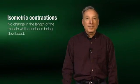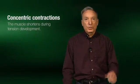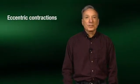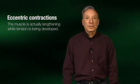First, let's review the three major types of contractions performed by skeletal muscle. I will provide an example of each one. Isometric contractions are defined as no change in length of the muscle while tension is being developed. In a concentric contraction, the muscle shortens during tension development. Lastly, with eccentric contractions, the muscle is actually lengthening while tension is being developed.